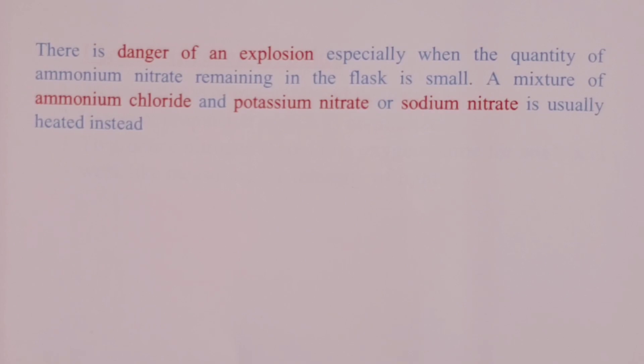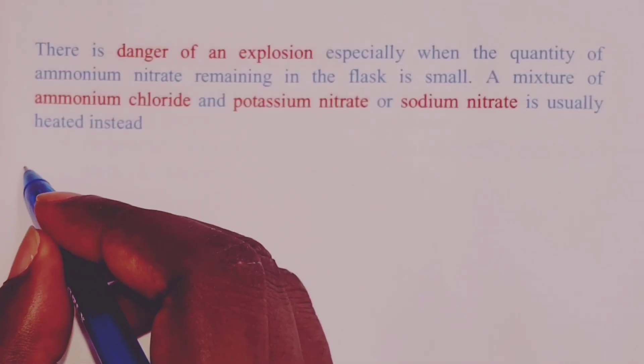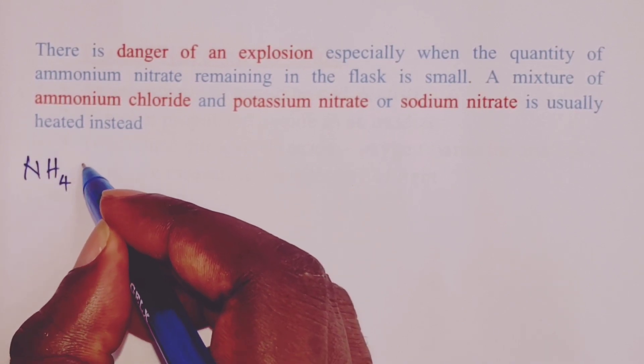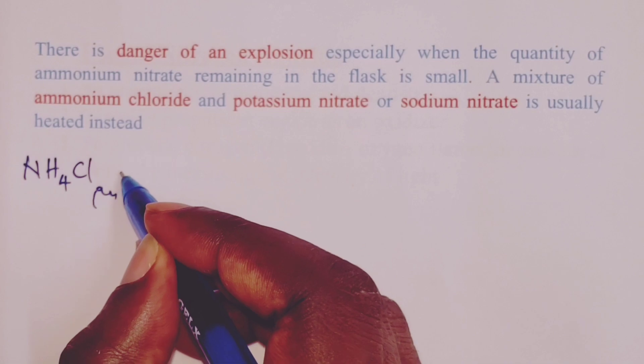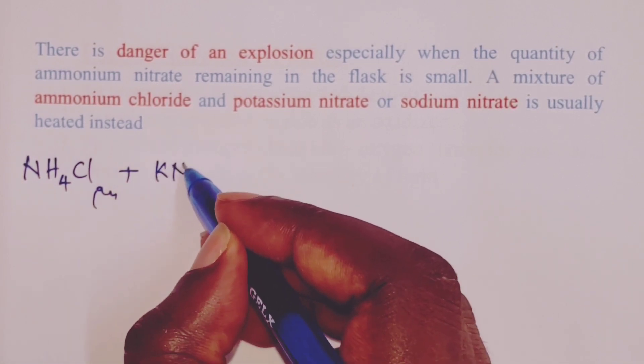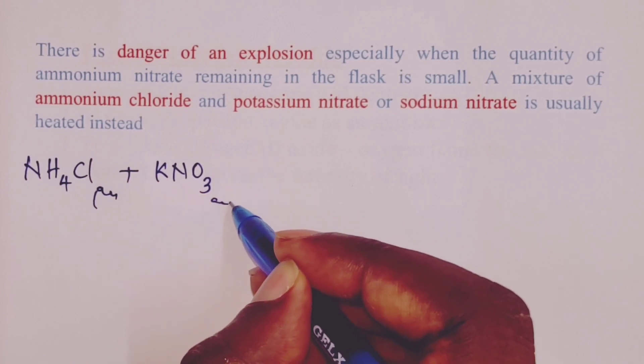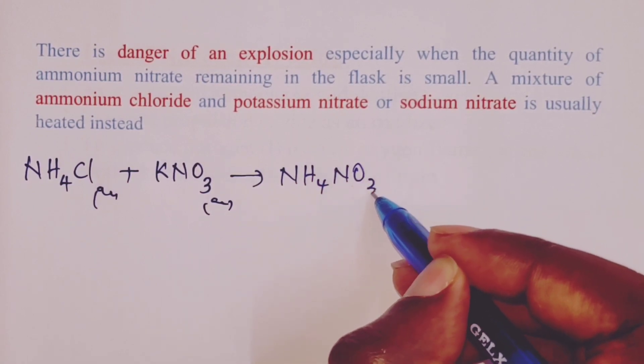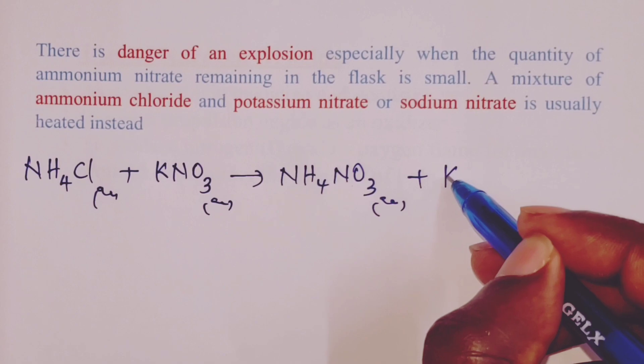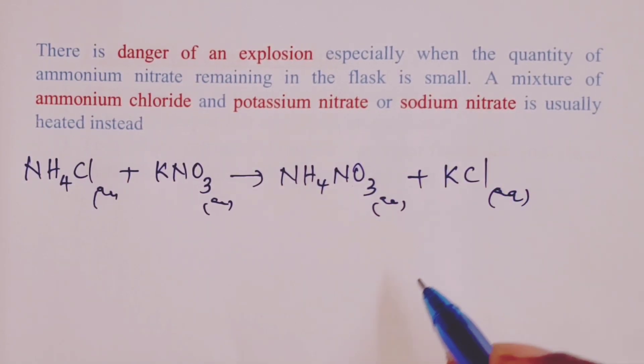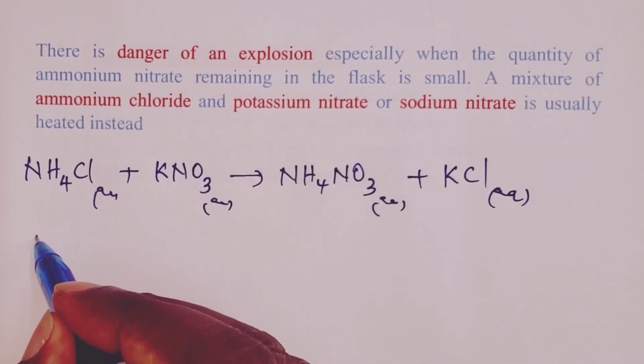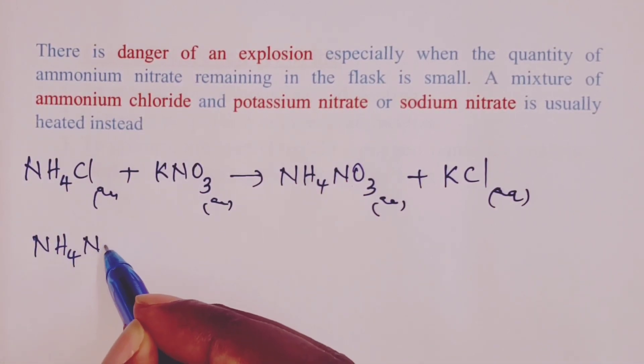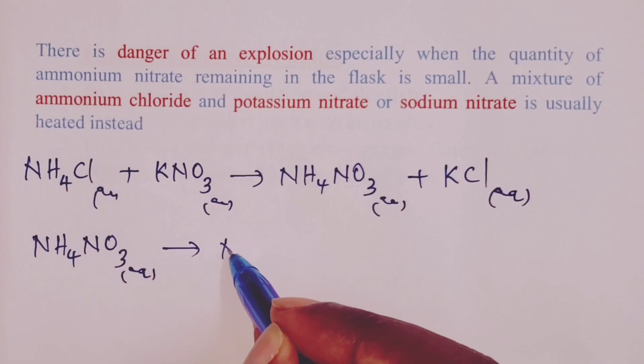So, when we heat the two, the equation for the reaction now becomes ammonium chloride reacting with, let us use potassium nitrate for this now. We shall obtain ammonium nitrate and potassium chloride. The moment ammonium nitrate is obtained, it shall decompose when heated and we end up getting our nitrogen (I) oxide and water.